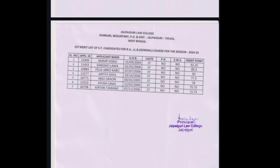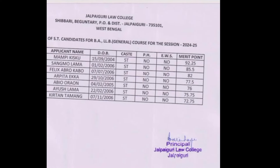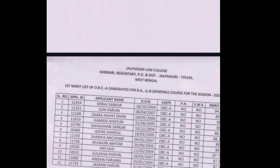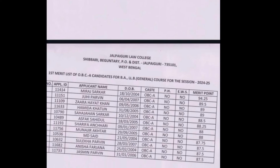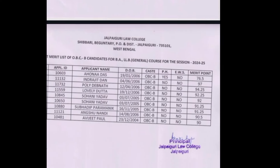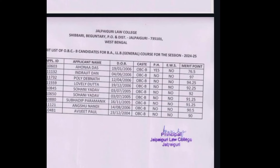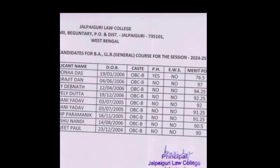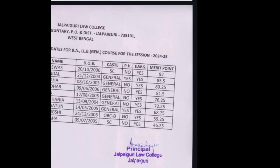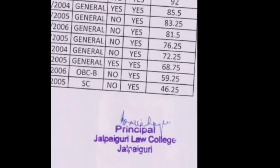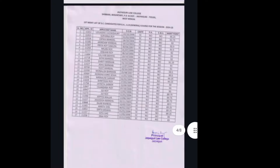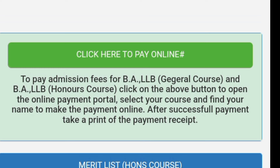We will see the SC category followed by the OBC category. The OBC category is listed as the second one. Now we will see the OBC-A category. The EWS last candidate score is 46.25. This completes the honours course list.